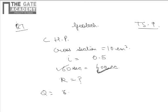as 600 divided by 60, which comes out as 10 cubic centimeters per second. Now, from Darcy's law, we